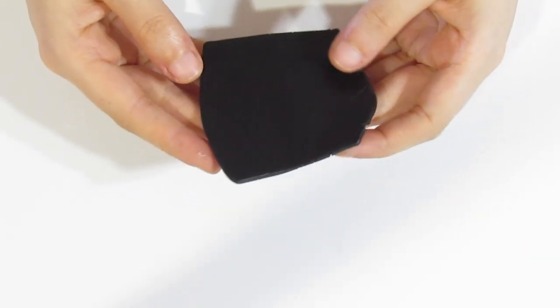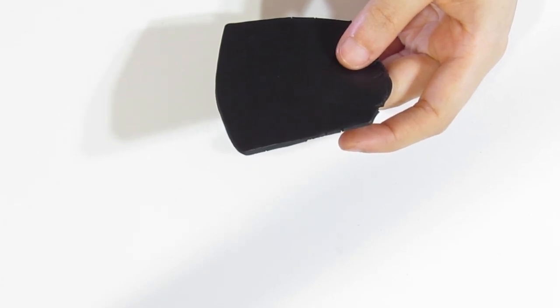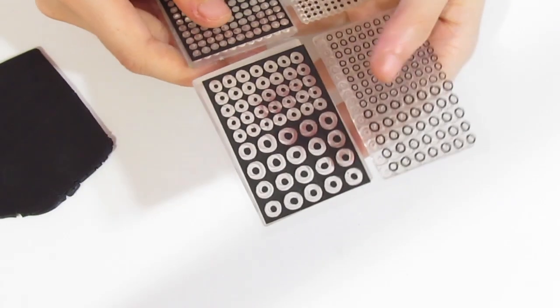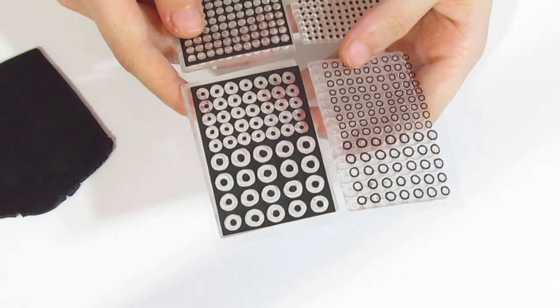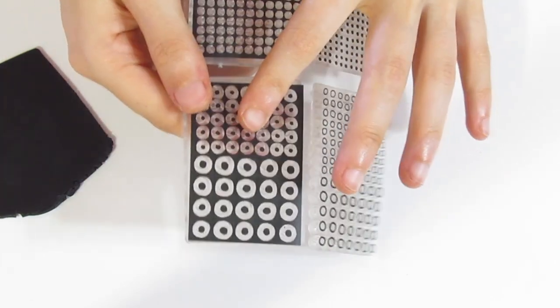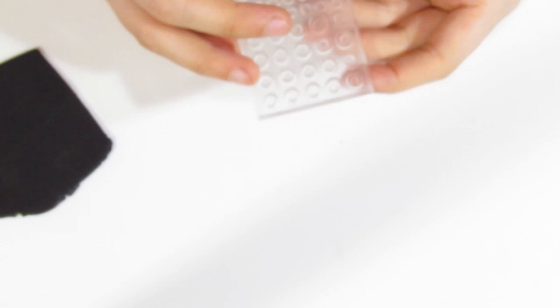First you're going to need a sheet of black polymer clay and this is Primo that I am working with today and you want it to be at least two to three millimeters thick. I generally just go with the thickest setting on my pasta machine and then you're going to want a texture stamp and I'm going to be using Melanie Mule's abstract marks. I'll provide a link in the description below and I'm going to be using this one because I think that this pattern is going to work really well for this project.